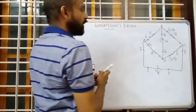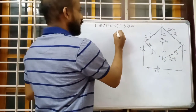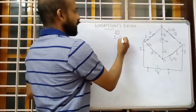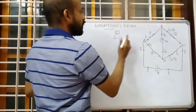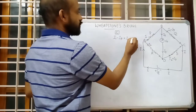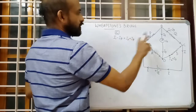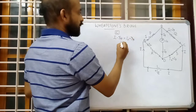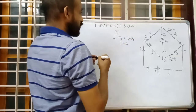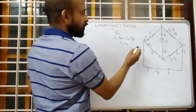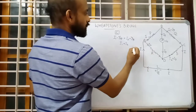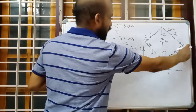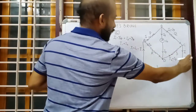Now we will apply the junction rule at junction C. At junction C, there are two currents coming: I1 minus Ig coming from the upper side, and I2 plus Ig from the lower side. They sum up at the junction. The Ig terms cancel, giving a net current of I1 plus I2. Since I splits as I1 and I2, we have I equals I1 plus I2 flowing in the lower arm back to the cell.